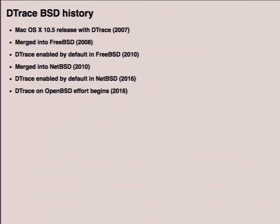After the Solaris history, macOS got DTrace and released 10.5 in 2007 — about two years after the Solaris release. It was merged into FreeBSD in 2008 and enabled by default in 2010. DTrace was merged into NetBSD in 2010 and enabled by default there as well. In 2016 is when DTrace on OpenBSD began, and they're making good progress. There was going to be a talk here about DTrace on OpenBSD but it didn't work out.